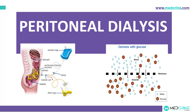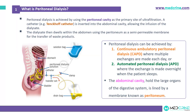Welcome to MedCrime. Today we shall be looking at one of the types of dialysis known as peritoneal dialysis. Peritoneal dialysis is a type of dialysis achieved using the peritoneal cavity as a primary site for ultrafiltration. A catheter is inserted into the abdominal cavity allowing the infusion of what is known as the dialysate solution, which then dwells within the abdomen using the peritoneal membrane as a semipermeable membrane for the transfer of waste products out of the body.